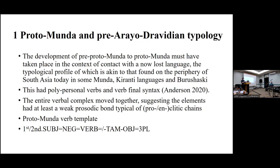By the time we get to proto-Munda, a significant change occurred. What we see in proto-Munda is the template at the bottom here, which is a proclitic of first and second person subjects, followed by negatives, followed by a verb tense-aspect marker, tense-aspect-mood and object marking, and then an optional enclitic third plural marker, which could encode either subject or not.